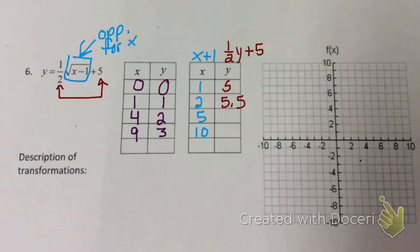2 times 1 half gives me 1, plus 5 equals 6. 3 times 1 half gives me 1.5, plus 5 gives me 6.5.